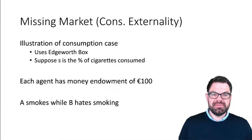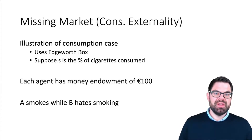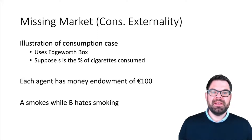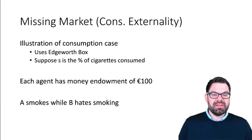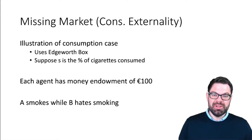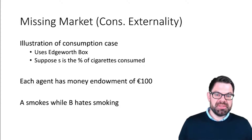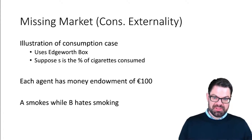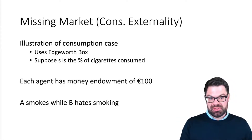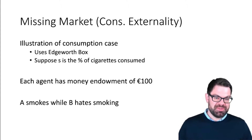In this and the next video, we will talk about private solutions to the problem of a negative consumption externality. We will illustrate the problem and also the solution using the tools we already know for the smoking example. We will use Edgeworth boxes, and we have two consumers: one who is a smoker and another person who hates smoking and who has a utility loss from the fact that the other person smokes.